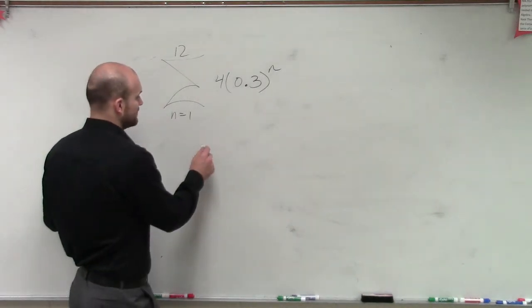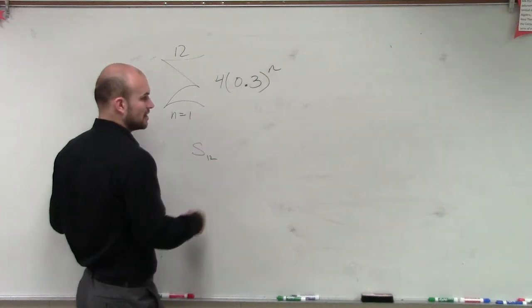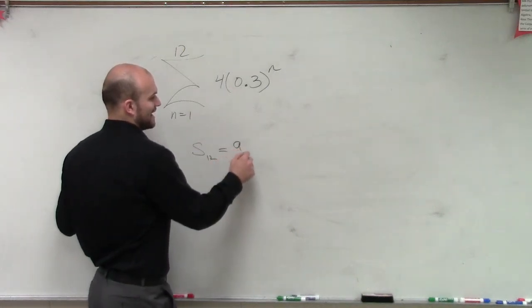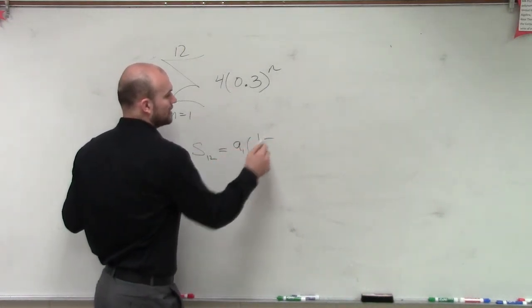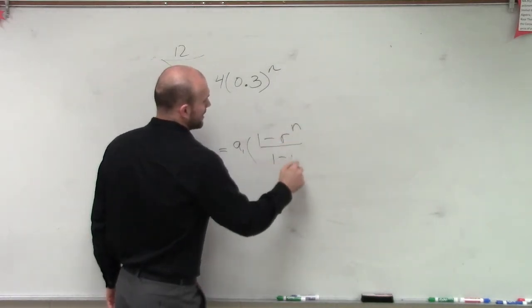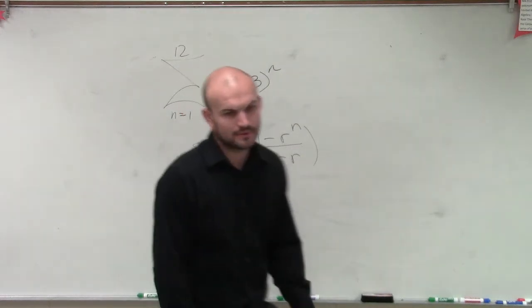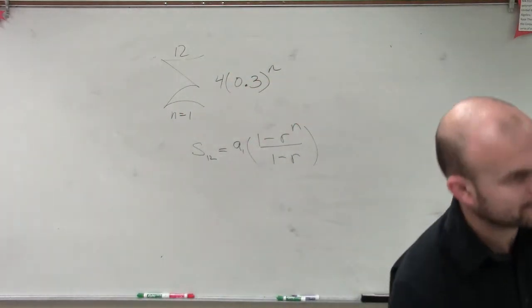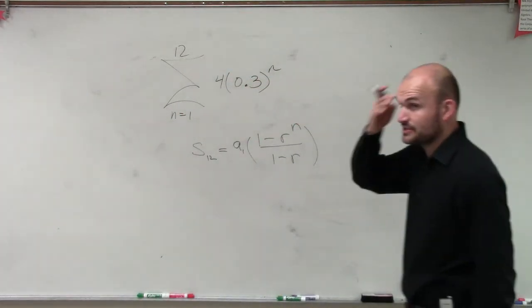So therefore, the sum to my 12th term is going to equal a sub 1 times 1 minus r raised to the n over 1 minus r. All right, so we're going to need a calculator for this one. There's a couple things you guys should remember.